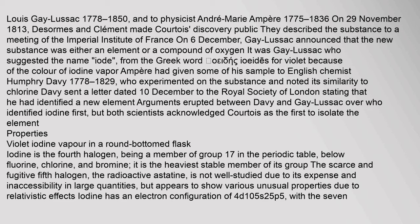On 29 November 1813, de Sormes and Clement made Courtois's discovery public, describing the substance to a meeting of the Imperial Institute of France. On 6 December, Gay-Lussac announced that the new substance was either an element or a compound of oxygen. It was Gay-Lussac who suggested the name iode, from the Greek word ioeides meaning violet, because of the color of iodine vapor. Ampère had given some of his sample to English chemist Humphrey Davy (1778–1829), who experimented on the substance and noted its similarity to chlorine. Davy sent a letter dated 10 December to the Royal Society of London stating that he had identified a new element. Arguments erupted between Davy and Gay-Lussac over who identified iodine first, but both scientists acknowledged Courtois as the first to isolate the element.